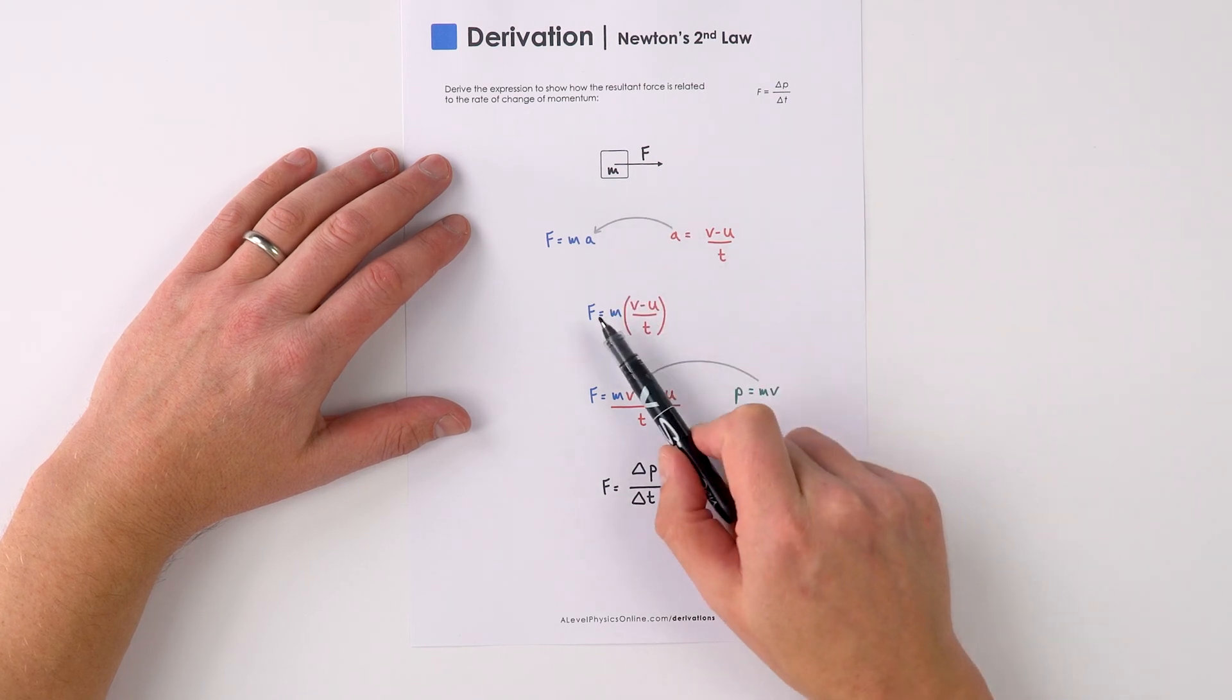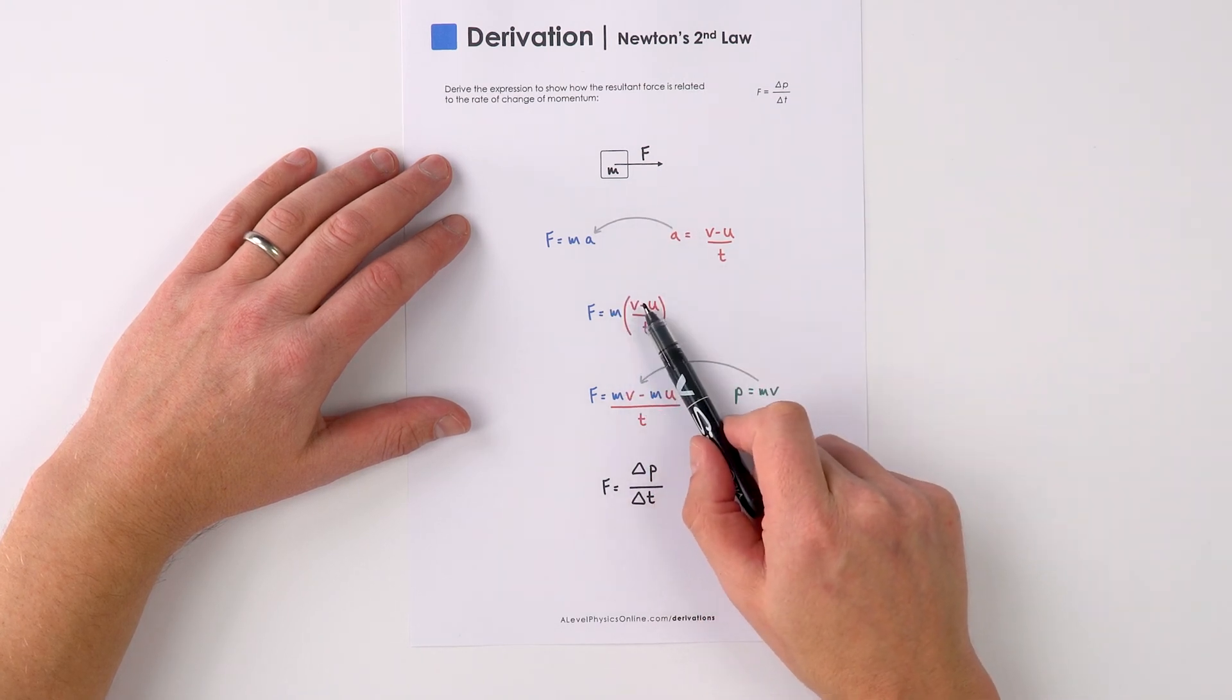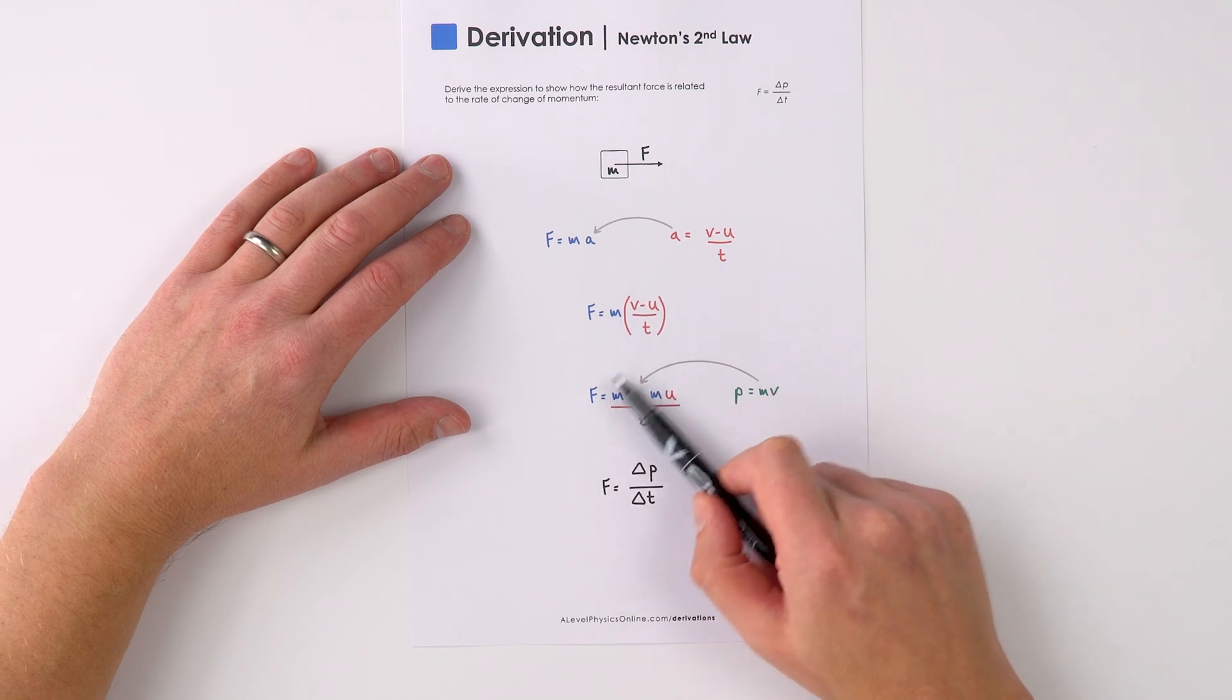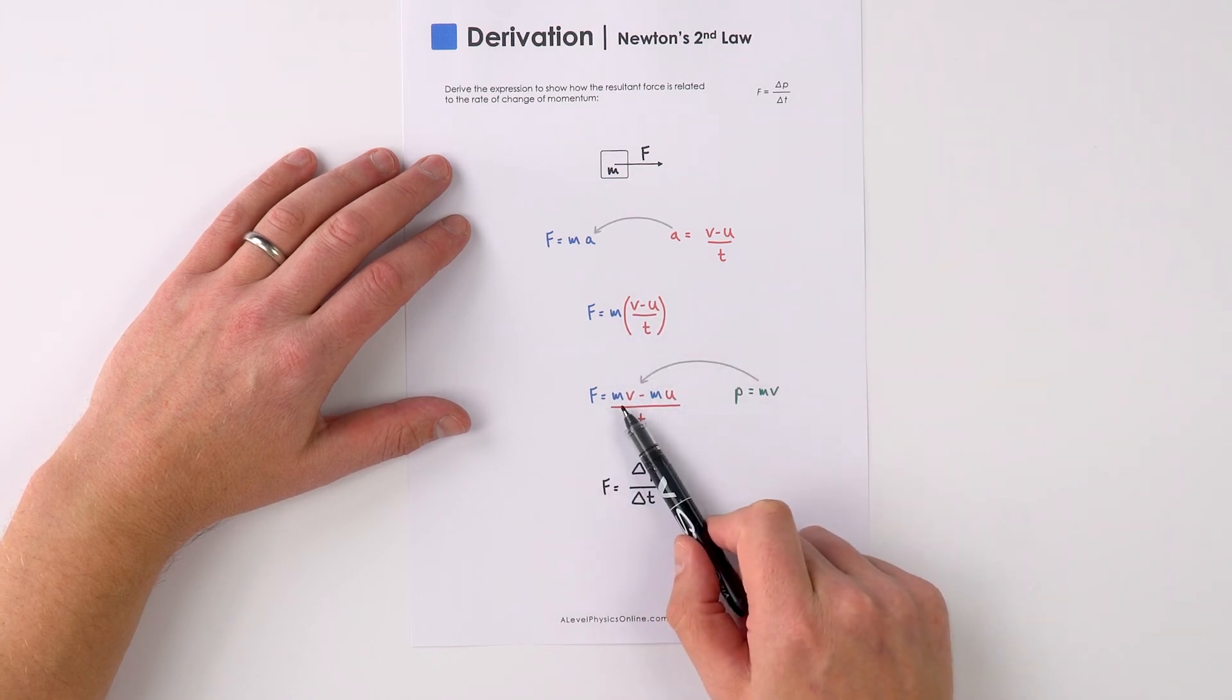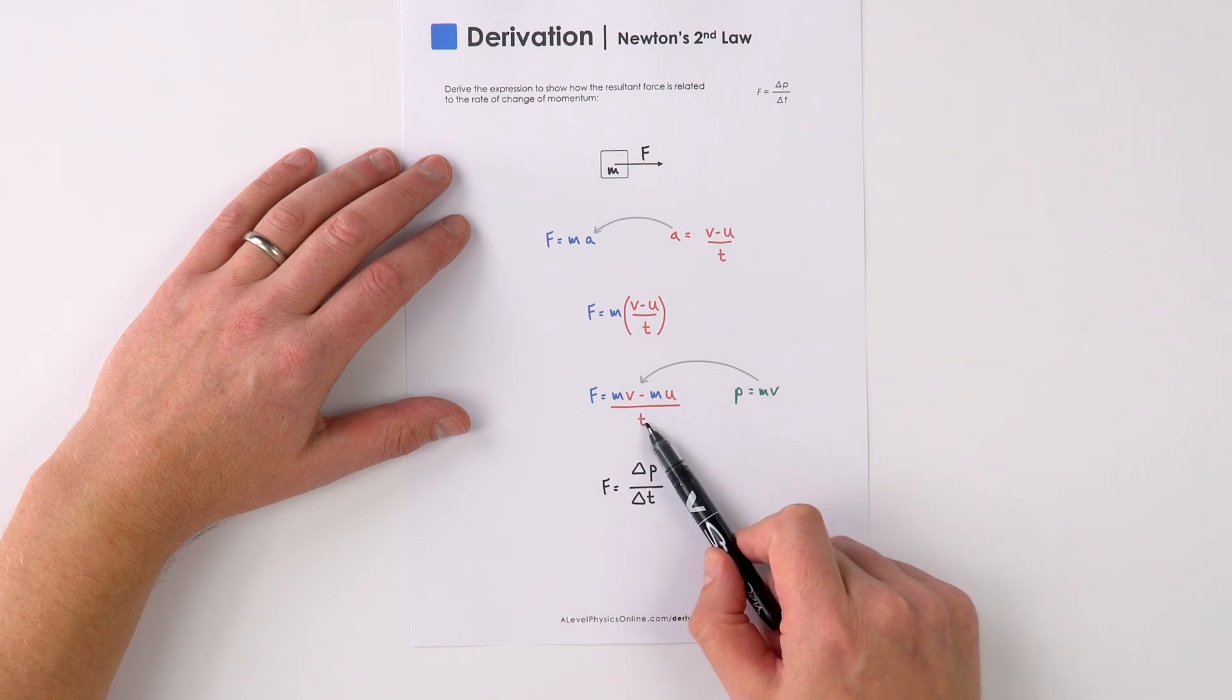So if we put that in over here, we can say that f equals m times v minus u over t. Once we multiply through the brackets, we can say that that force is equal to mv minus mu over t.